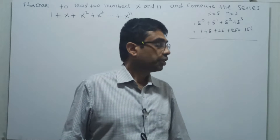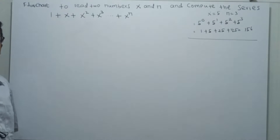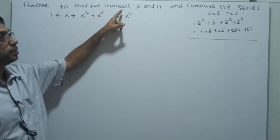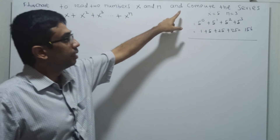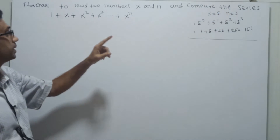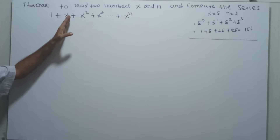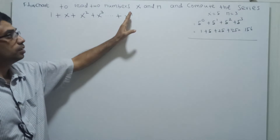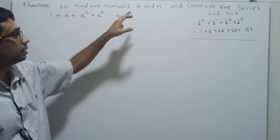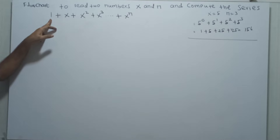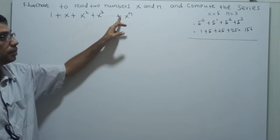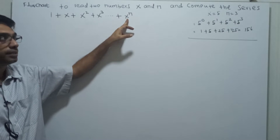Hi friends, today we are going to draw a flowchart to read two numbers x and n and compute the series 1 plus x plus x squared plus x cubed up to x power n. That means x power 0 which is 1, x power 1 equal to x, x squared plus x cubed up to x power n.